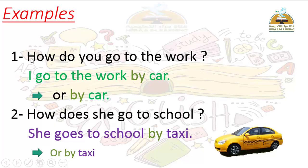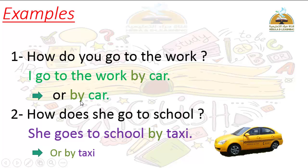So we agreed today we took the question word How, meaning 'how,' used to ask about means of transport. The form starts with How, then the helping verb — either Do or Does — depending on the subject. For example: How do you go to the work? Answer: I go to the work by car. All means of transport take the preposition 'by' before them, except 'foot,' which takes 'on foot.'